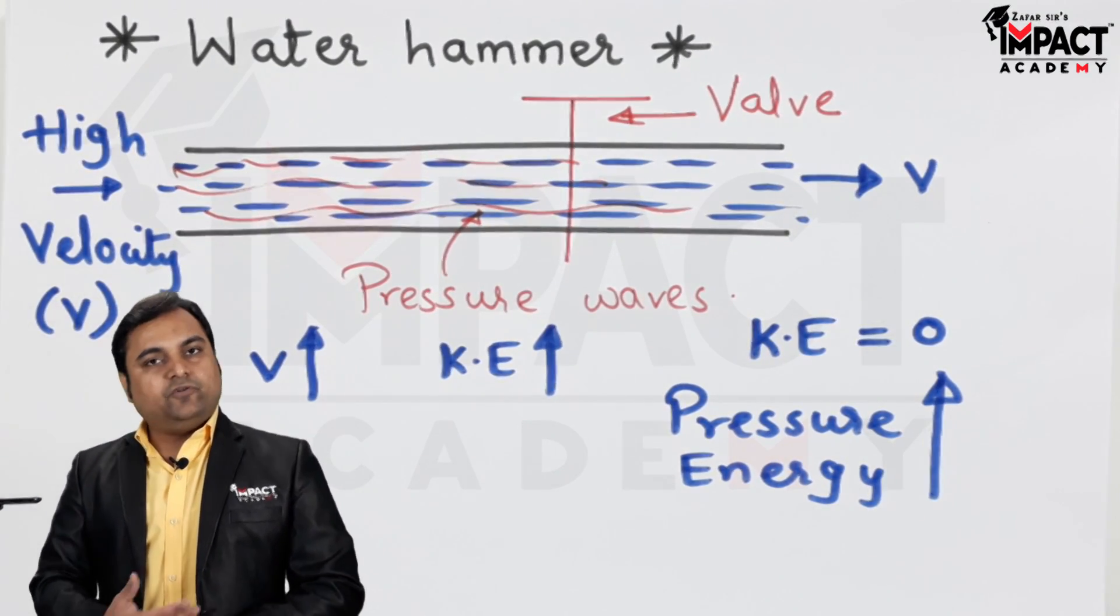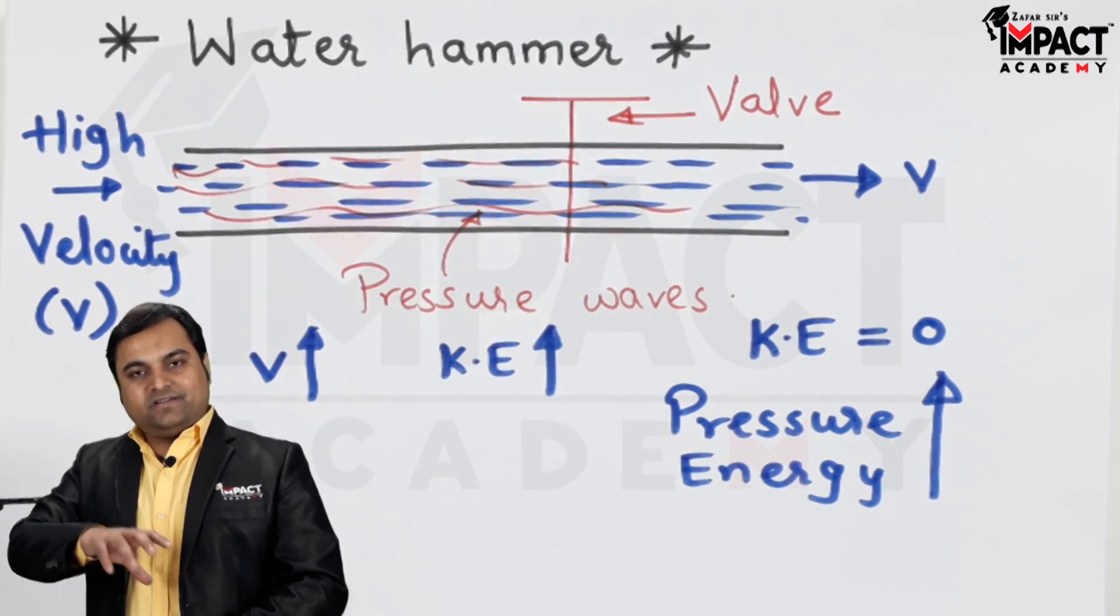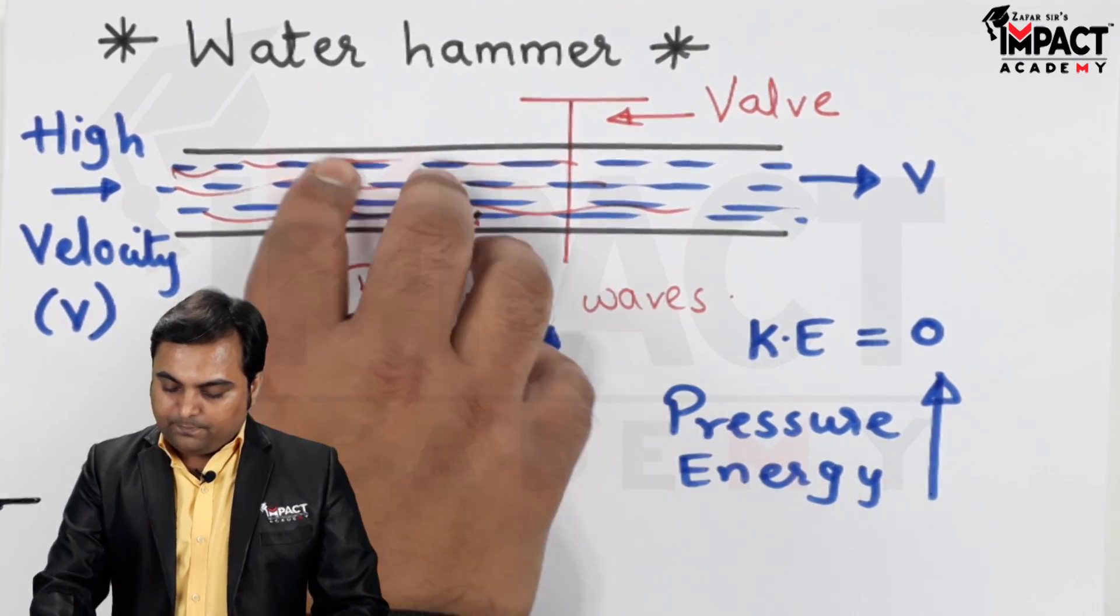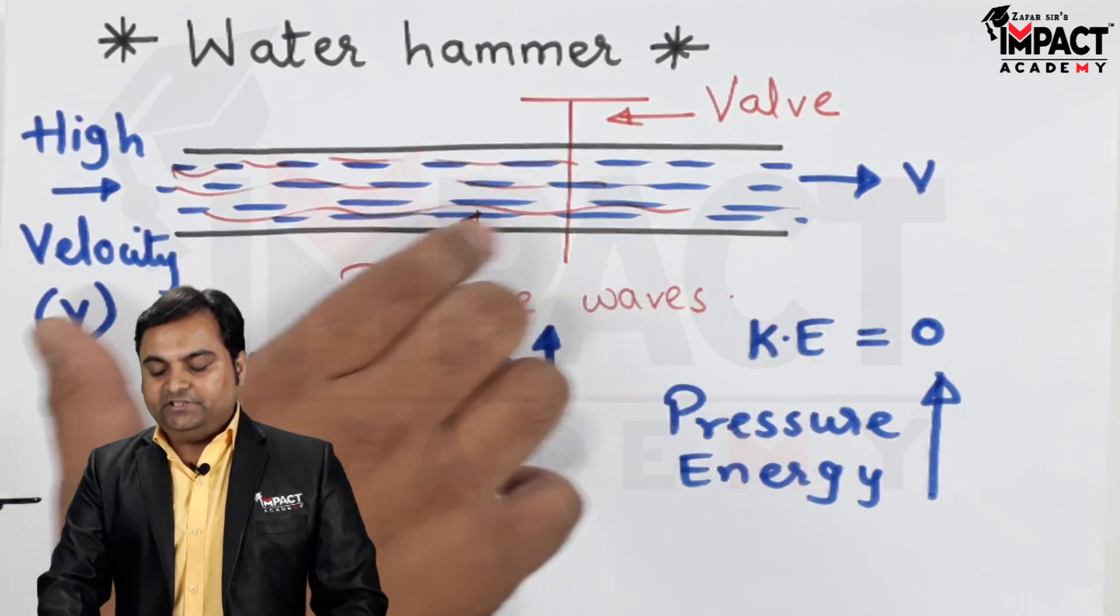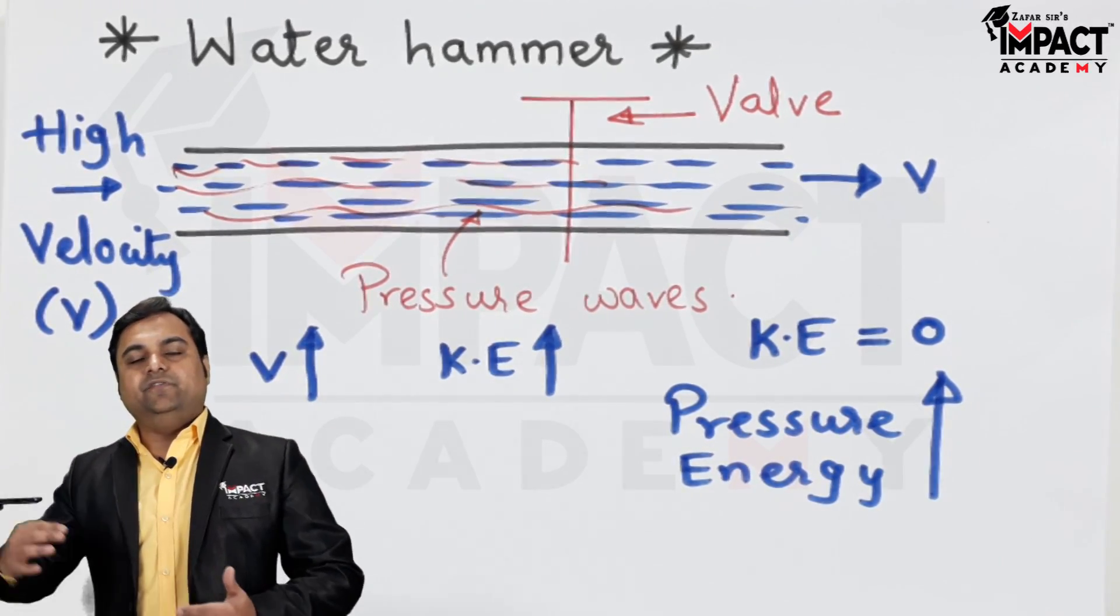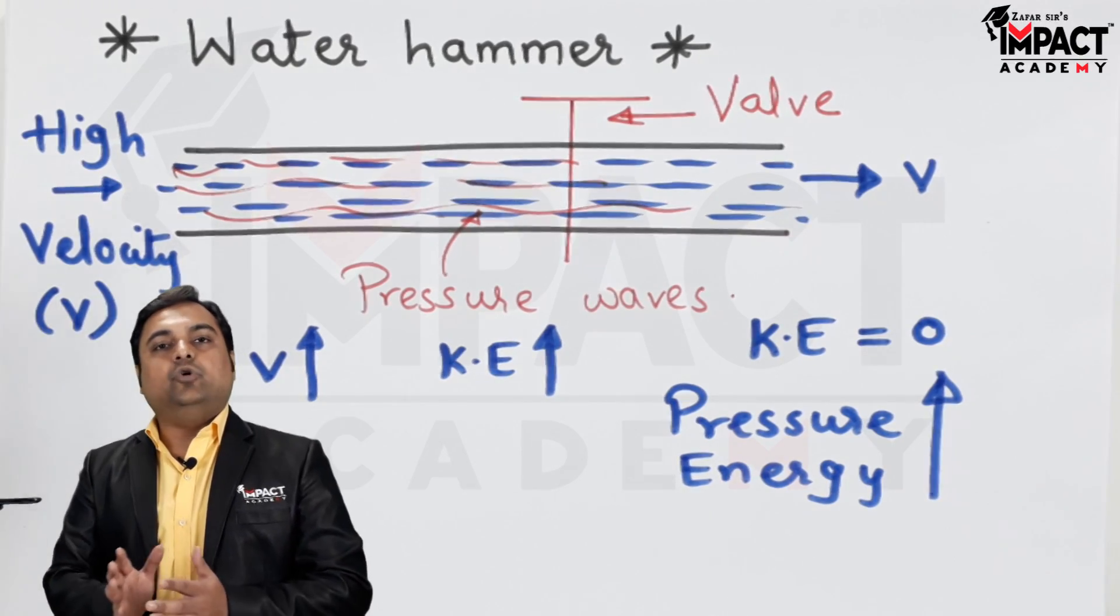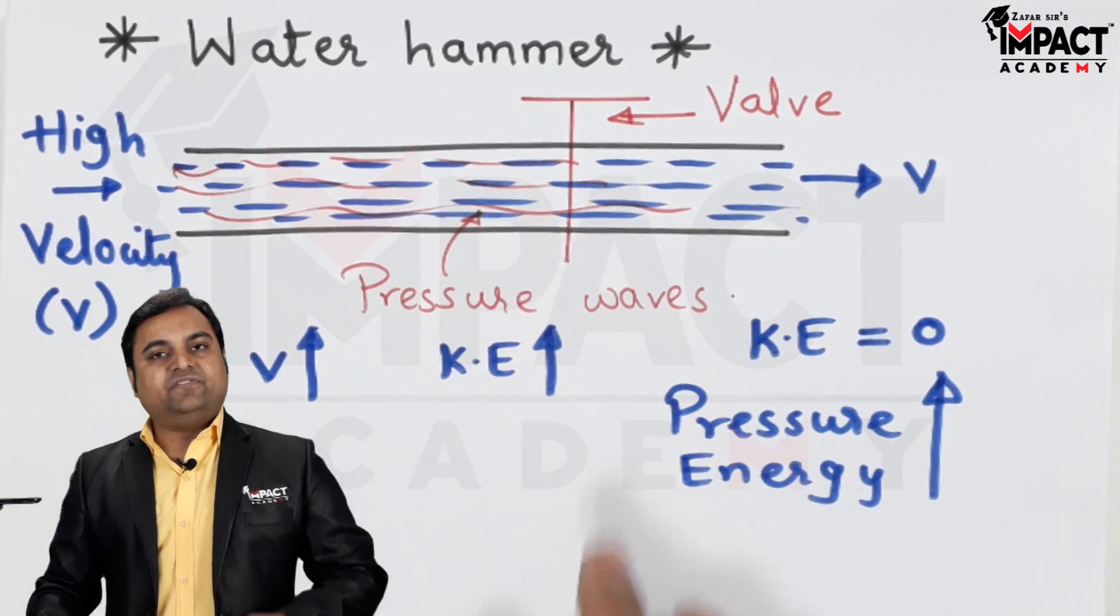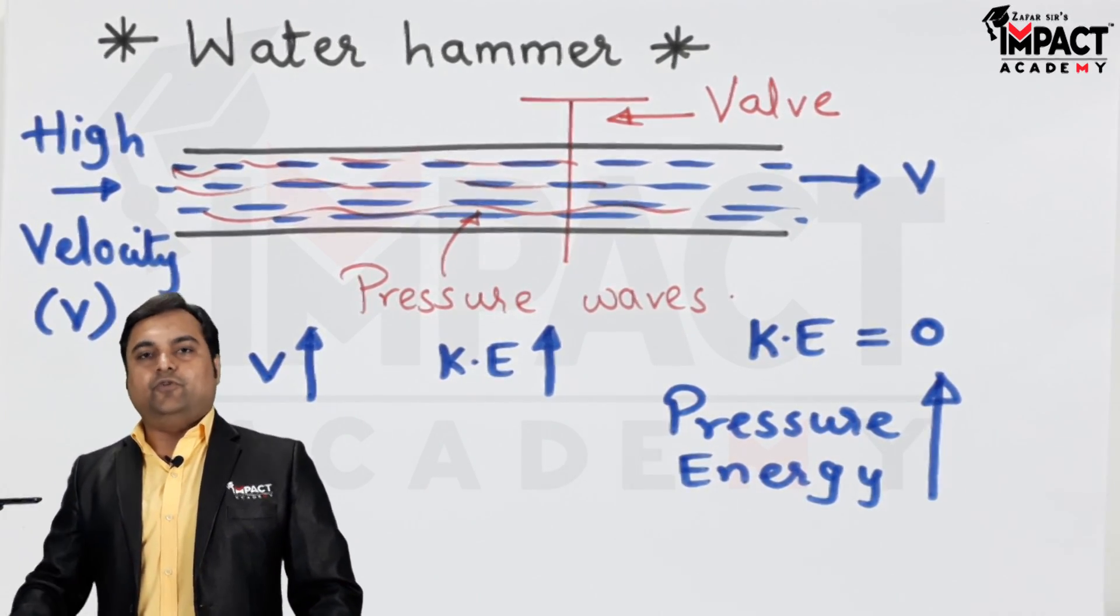So one of the remedies provided for water hammer would be to close this valve gradually. And at the same time, we can have some air vessels close to the valve so that when the pressure intensity increases, the pressurized liquid will go inside the air vessel and would be compressing the air over there. So in that case, the effect of pressure waves can be reduced. So in short, that was an explanation of water hammer.